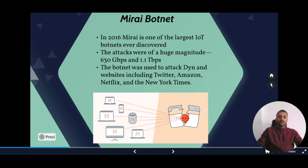The botnet was first used to attack websites, and later its objective shifted to attacking DYN, one of the largest DNS providers, which supports popular websites like Twitter, Amazon, Netflix, and the New York Times. All of these websites went down because this botnet attacked their DNS provider.